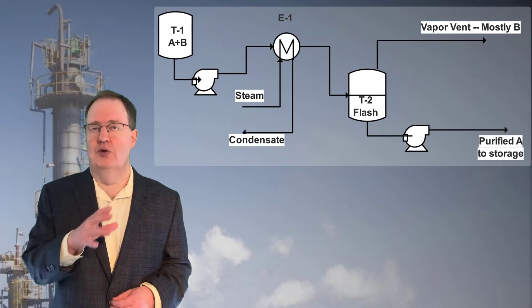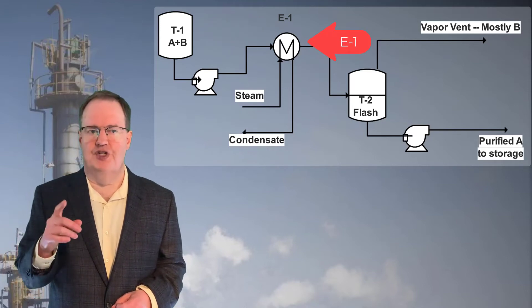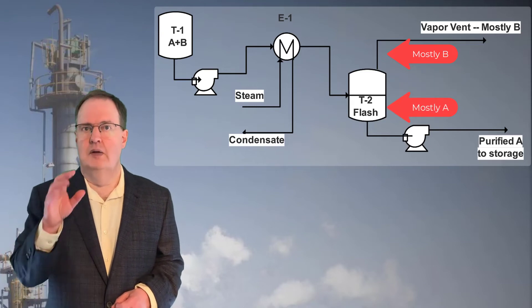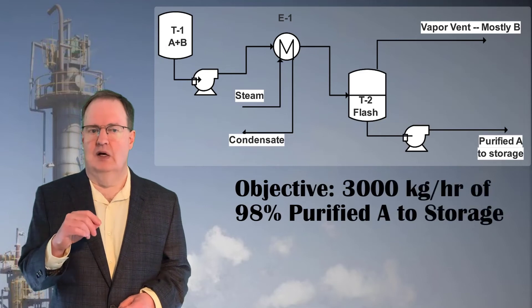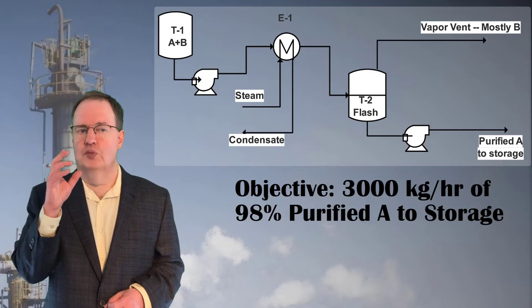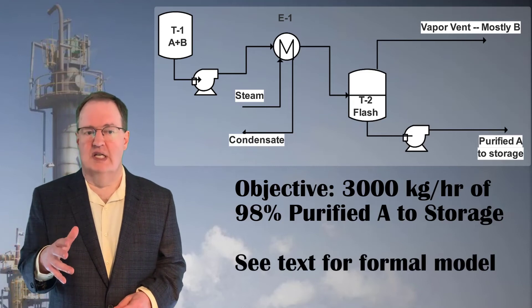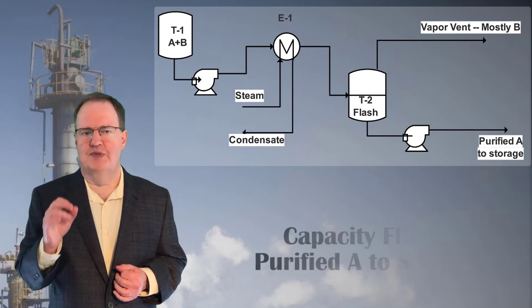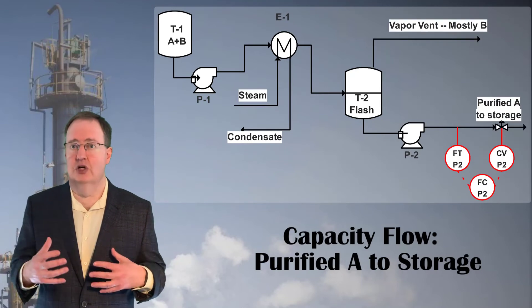Let's look at a second, slightly more complicated example: a flash tank. Here, heat is applied to a binary mixture of A and B from T1 using the steam heat exchanger E1. When the mixture of A and B reaches T2, some of it vaporizes, forming a mostly-B vapor stream and a purified-A liquid stream. B clearly has a higher vapor pressure than A. The objective for this flash tank unit is to deliver 3,000 kilograms per hour of 98% purified A to storage. The formal mass and heat balance consists of 18 variables and 9 initial equations, so let's tackle it with the heuristic method. The capacity flow is the specified fixed flow of 3,000 kilograms per hour for the purified A liquid leaving the flash tank bottom — we'll need to measure and control that flow first.